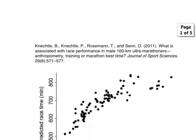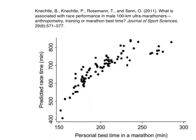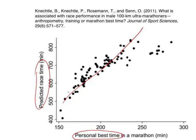In our first example we study marathon runners. The scatter plot here shows the relationship between each runner's personal best time and the predicted race time. If we try to place a straight line through the points to capture this relationship we really can't do it very well. No straight line really captures the relationship, and that's because the relationship is not linear, so a correlation coefficient is inappropriate for numerically describing this relationship.